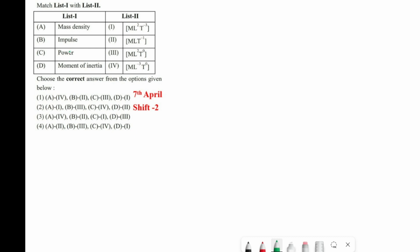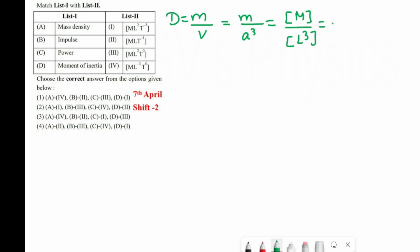We have to find the dimension formula for the following quantities. First one is mass density. The formula is: density = mass / volume. Taking the volume of a cube, we write it as a³, so the dimension is m/L³ = ML⁻³. So mass density A matches with 4.